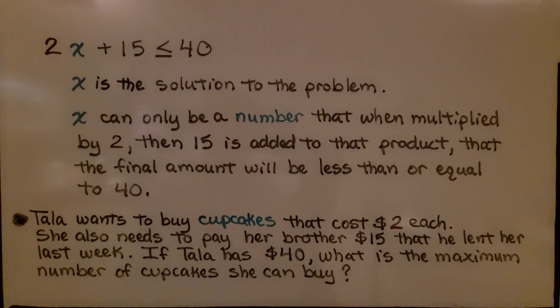In 2x plus 15 is less than or equal to 40, x is the solution to the problem. x can only be a number that when multiplied by 2, then 15 is added to that product, that the final amount will be less than or equal to 40.